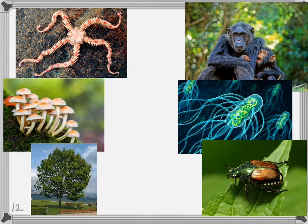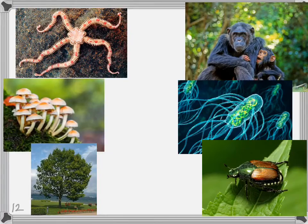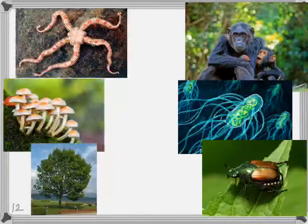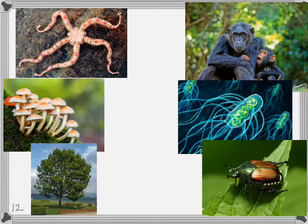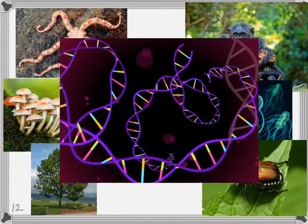What makes all these living things different from one another? Their traits, their characteristics. Traits like having a single cell or having many, having two or four or six legs, having no legs, performing photosynthesis or having to eat others for energy. What controls these traits and characteristics? Their genes, their DNA. We'll talk more about that later.